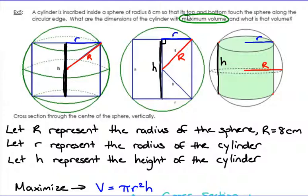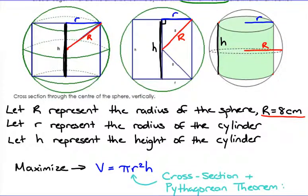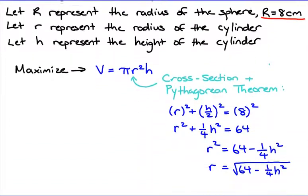Let statements: let big R represent the radius of the sphere, let little r represent the radius of the cylinder, and let h represent the height of the cylinder. We want to maximize the volume of the cylinder, which is V = πr²h. We can't take the derivative yet because we have both r and h as variables. To solve for one in terms of the other, we use the cross-section and the Pythagorean theorem.